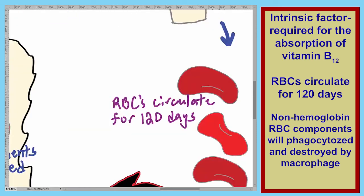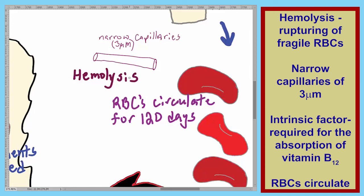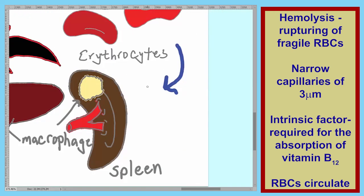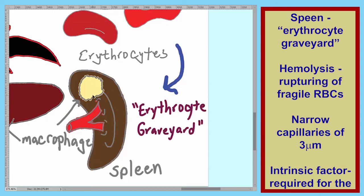The next observation deals with the breakdown of red blood cells. As red blood cells pass through the spleen and the liver, they have to travel through very narrow capillaries — which may have a diameter as small as three micrometers. If their membrane is fragile, they will rupture. This rupturing process is called hemolysis. Hemolysis takes place in the spleen and the liver, but it occurs more in the spleen. Because so much hemolysis takes place in the spleen, the spleen is often referred to as the erythrocyte graveyard.